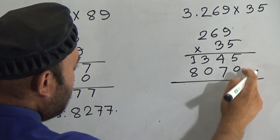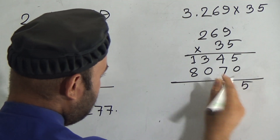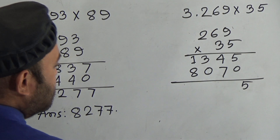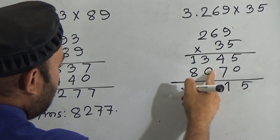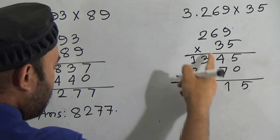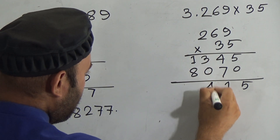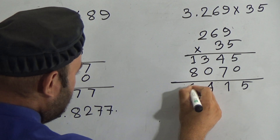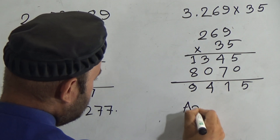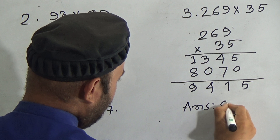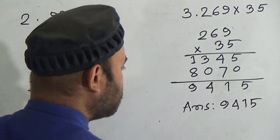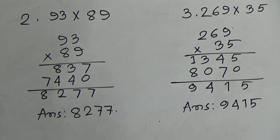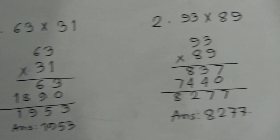Now add these numbers: five plus zero is five; seven plus four is eleven, carry one; one plus zero is one; one plus three is four; eight plus one is nine. So the answer is nine thousand four hundred fifteen. Hope you understood this type of multiplication.